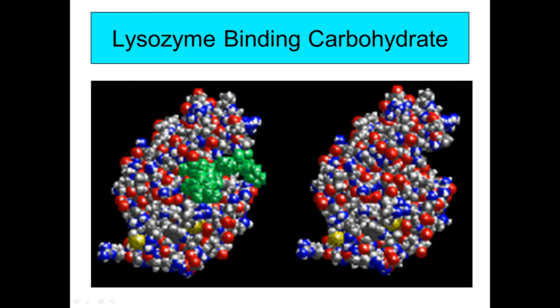Here is an example of an enzyme binding its substrate. This enzyme is a very small protein called lysozyme, and here lysozyme is binding a carbohydrate. This is the binding site for the enzyme, and in green is the carbohydrate. Without the carbohydrate present, you can see there's kind of a cleft in the molecule.